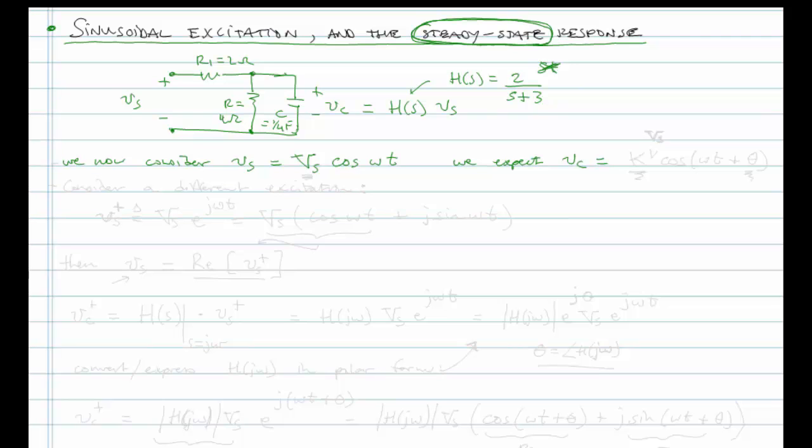And so we expect that it will be sinusoidal in nature. It would be something like some constant k cosine omega t, and it may have some angle theta. So there may be some phase shift, phase lag, and there could be an amplitude that's different than what we excite it with. That's in keeping with what we found so far.